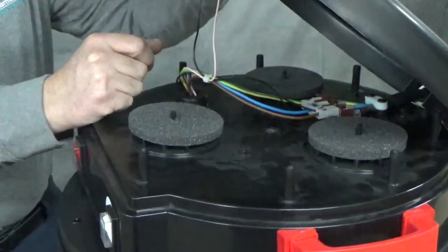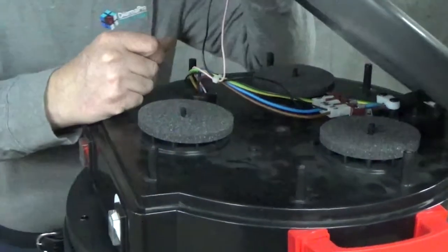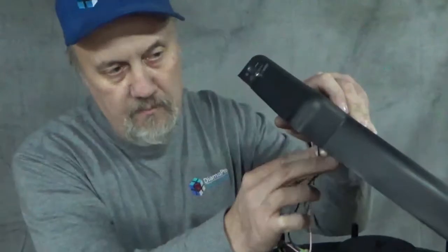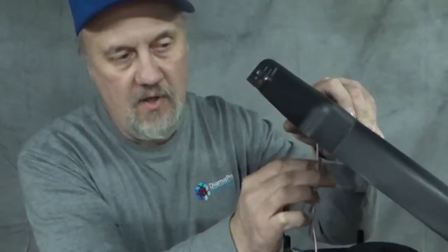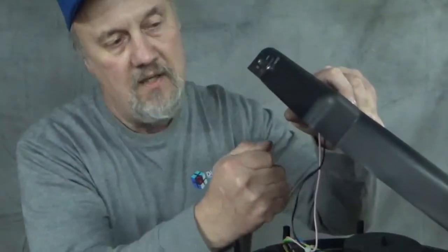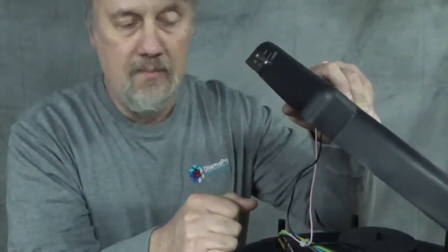Another big tip before disconnecting any of the wires, you can either label them or use a cell phone and just take photos of them so that you can see where they go when time comes to put them back.